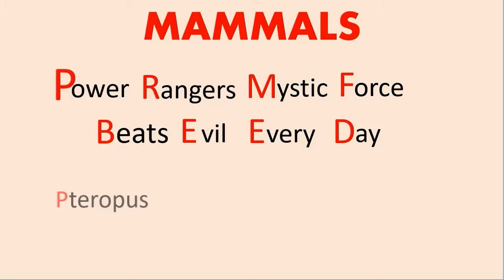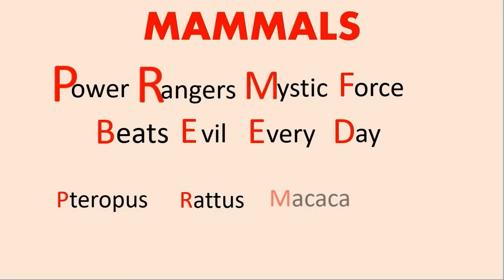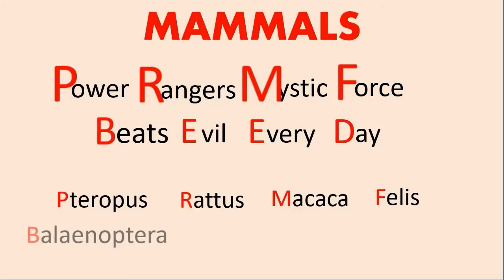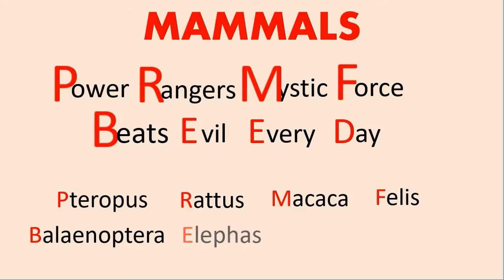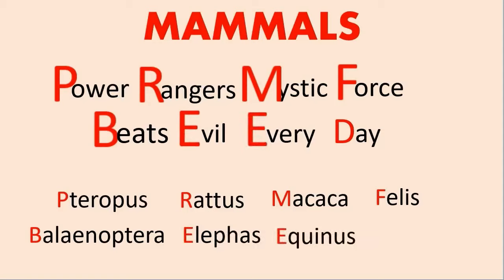Power's P is for Pteropus, which actually has P silent. Ranger's R is for Rattus. Mystic Force's M is for Macaca and F is for Felis. Beats' B is for Balaenoptera. Evil's E is for Elephant. Every's E is for Equinus. And Day's D is for Delphinus.